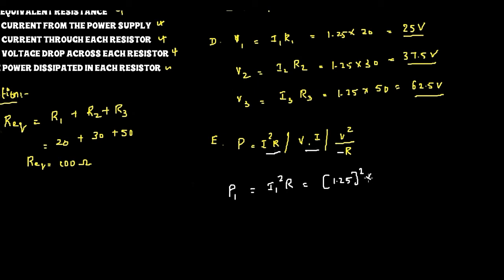P2, we can use the second formula, V2 dot I2. So V2 is 37.5 multiplied by I2, which is the same as I1, 1.25. So we'll get 46.875 watts.